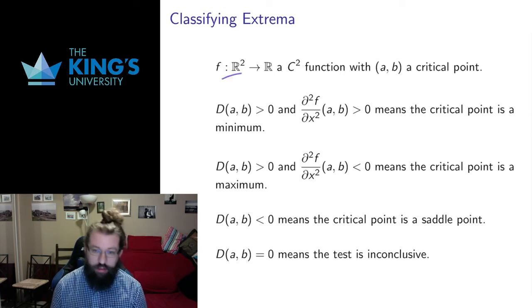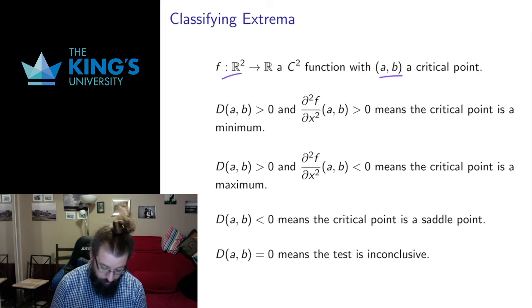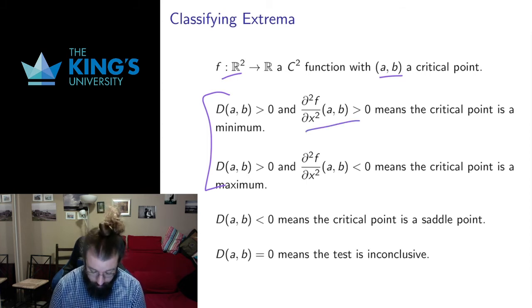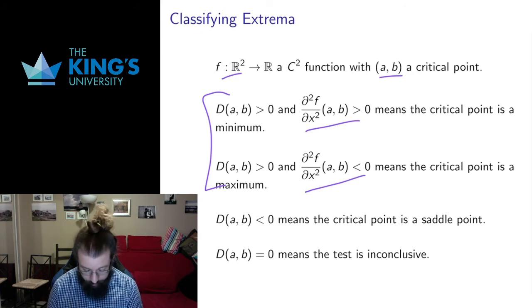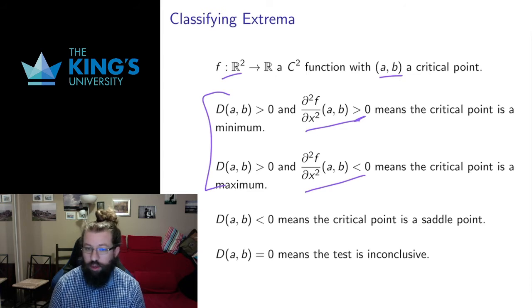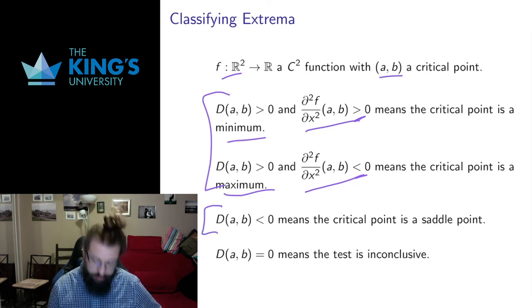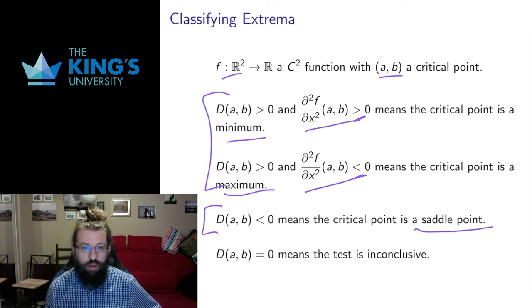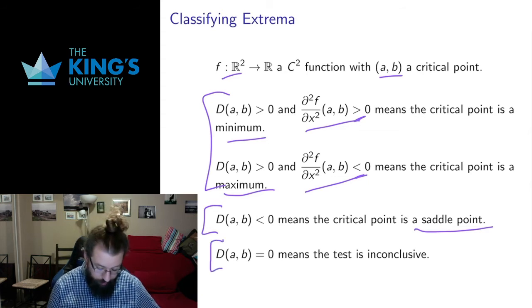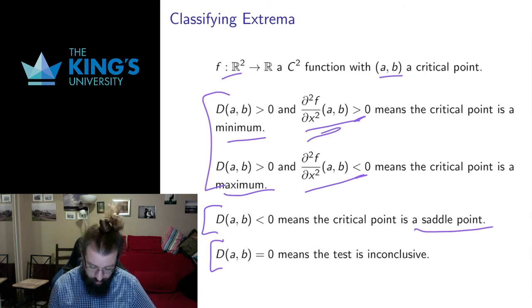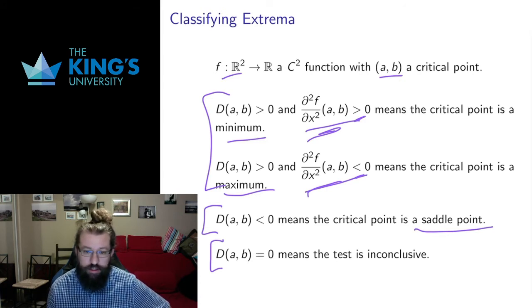For a scalar field in R2 with a critical point (a, b): if D is positive, then I either get a max or a min. To figure out which, I look at the pure second partial with respect to x — if that is positive, the same concavity as in the single variable situation gives me a minimum; if negative, I get a maximum. If D is less than zero, I get a saddle point — a maximum in one direction and a minimum in another. If D equals zero, the test is inconclusive. But this is a pretty good system: I calculate this combination of second partial derivatives and check its sign, then check one more second partial to conclude.